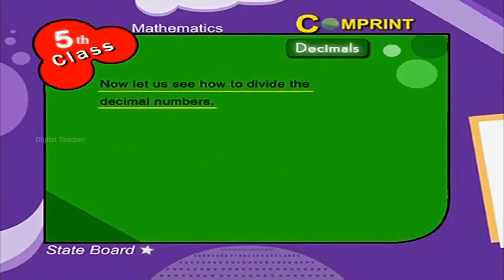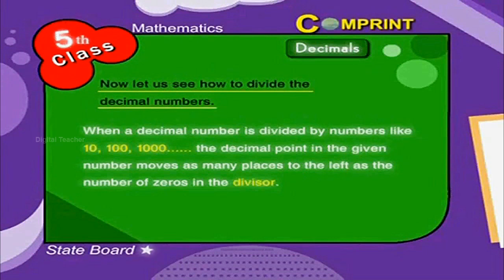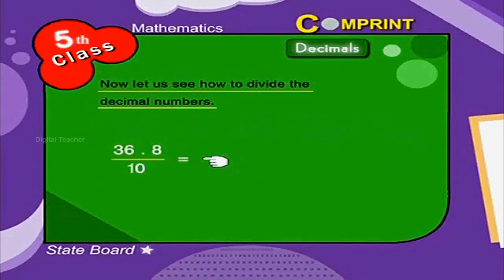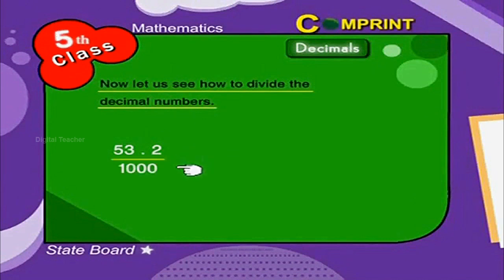When dividing a decimal number by 10, 100, or 1000, the decimal point moves as many places to the left as the number of zeros in the divisor. For example, 36.8 divided by 10 equals 3.68. In another example, 53.2 divided by 1000 equals 0.0532.